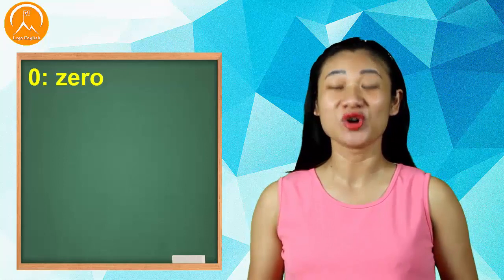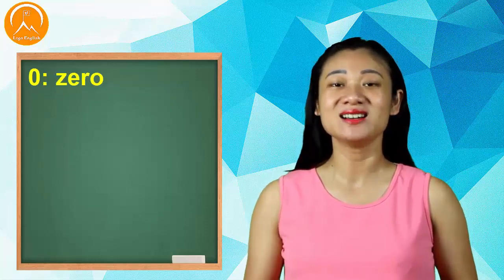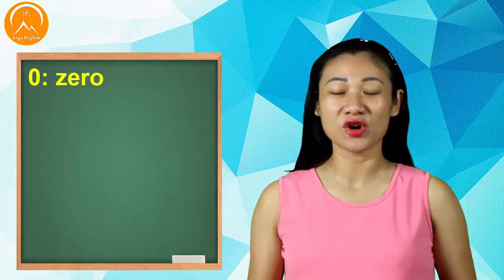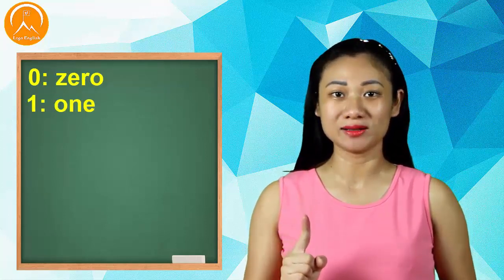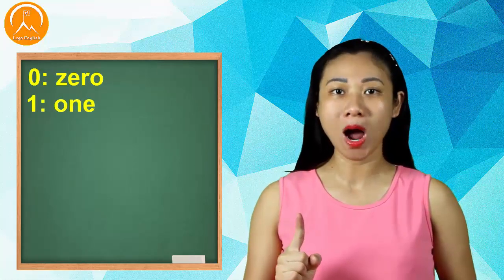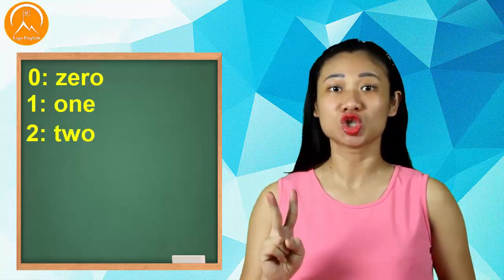Ví dụ, chúng ta đã được học về số trong bài trước rồi. Từ 0 đến 10 chúng ta đã được học rồi. Các bạn còn nhớ không? 0 là zero. Mình cùng lặp lại một lần thật nhanh nhé. 1 là one. Số 2 là two.